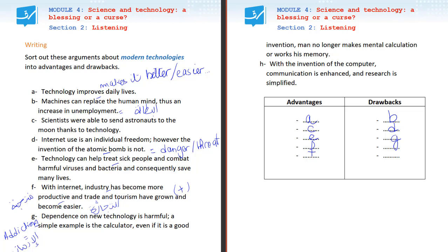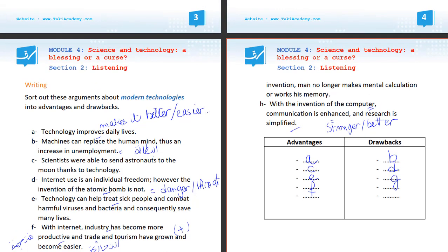Let's have a look at the last sentence. H: 'With the invention of the computer, communication is enhanced and research is simplified.' Modern technology enhances communication — it makes it stronger and better — and research is simplified or simpler. You use it for your education, for your studies, for making research. So it's for a good reason, we put it in advantages.